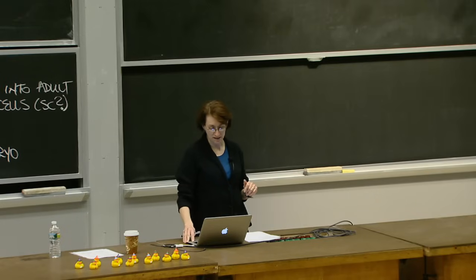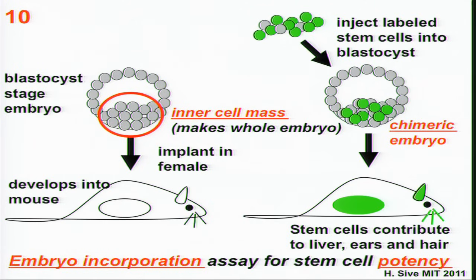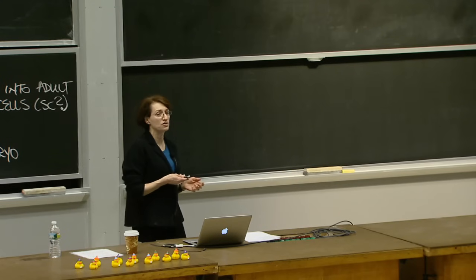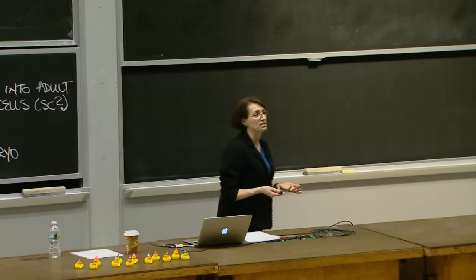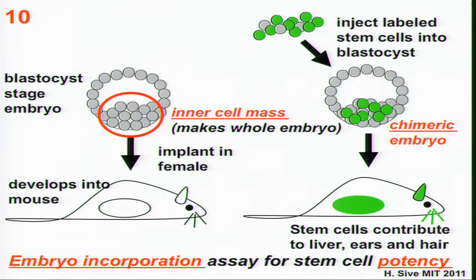You can do a similar experiment in a whole mouse. The embryo is made from a part of the very early embryo called the inner cell mass. You can inject labeled putative stem cells into this inner cell mass part of an early mouse embryo, put it into a recipient mother, and ask what kind of embryo comes out. If the baby from this chimeric embryo has a green liver and green ears and green whiskers, you know the cells you introduced had the capacity to give liver, ears, and whiskers. This is a powerful assay to look at the potency of cells.